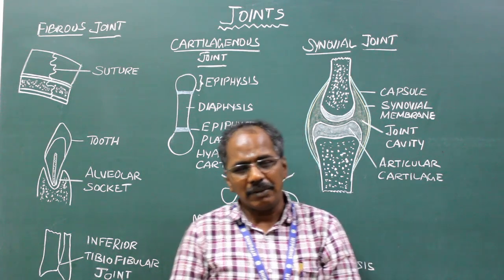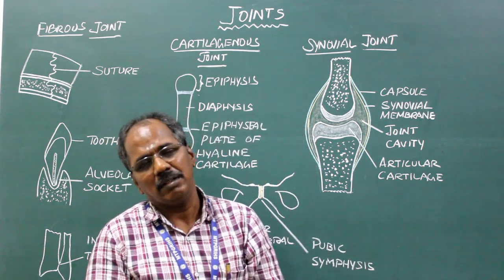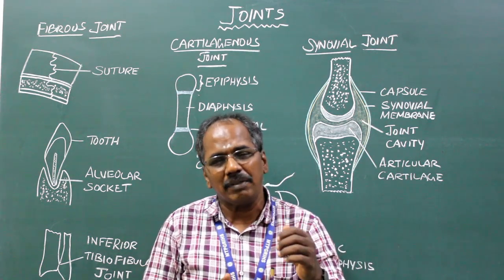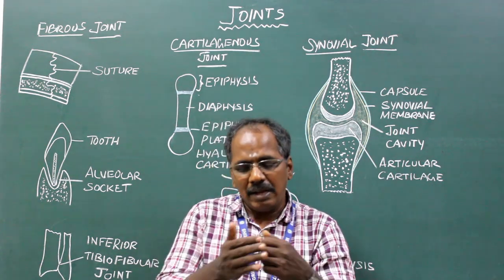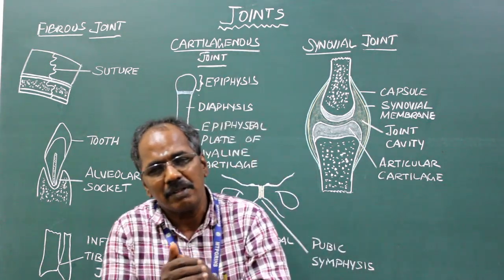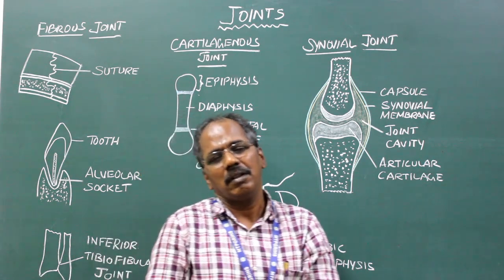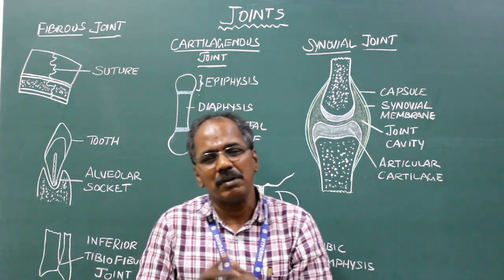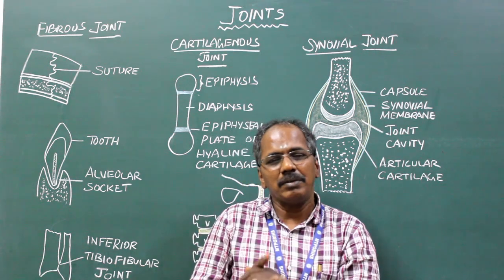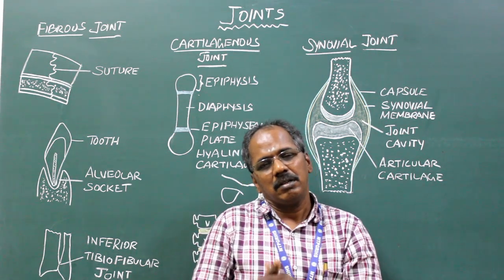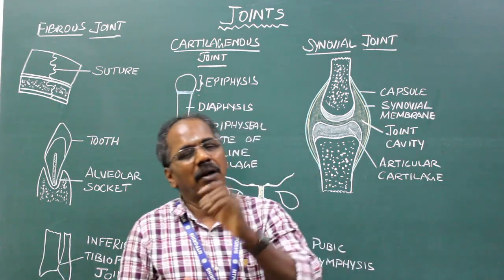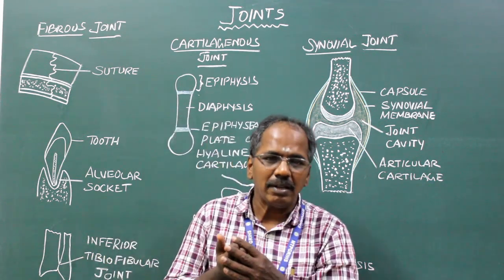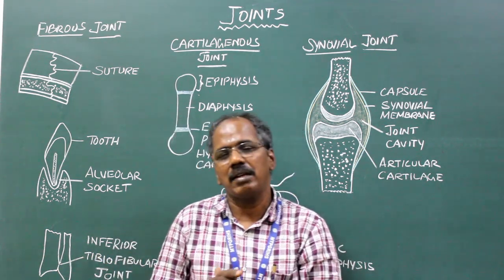Number 2: Hinge variety. In this type, one of the convex articular surfaces articulates with the concave articular surface of another bone. It resembles the hinge of a door. There are only two movements possible in this joint. For example: elbow joint, interphalangeal joint, and ankle joint.